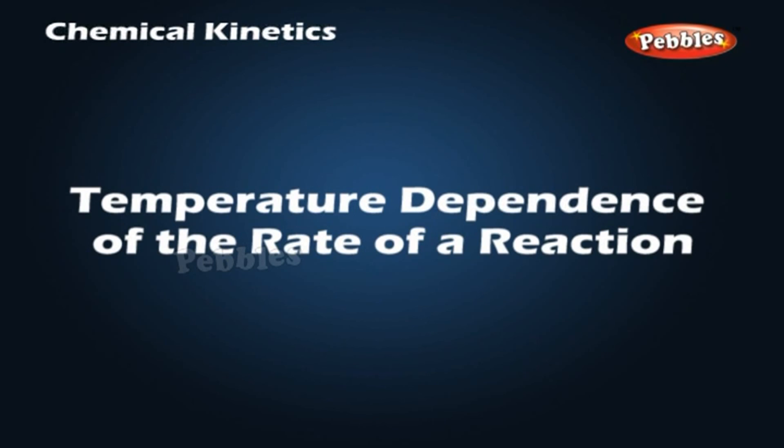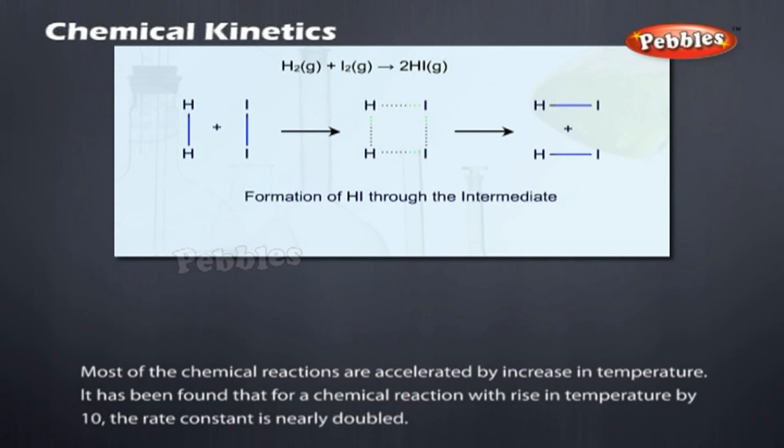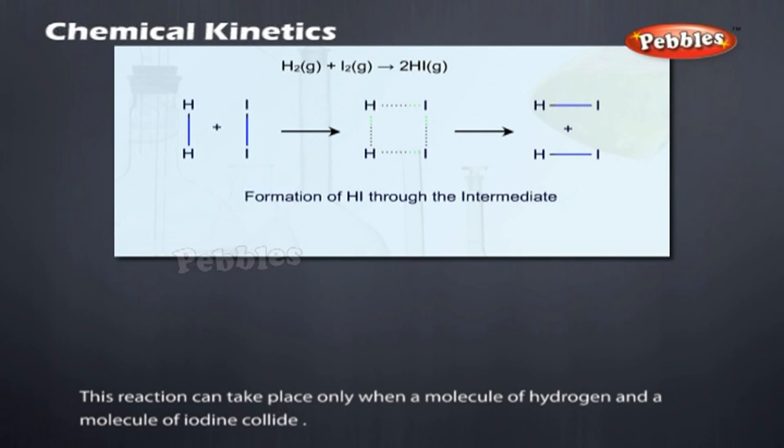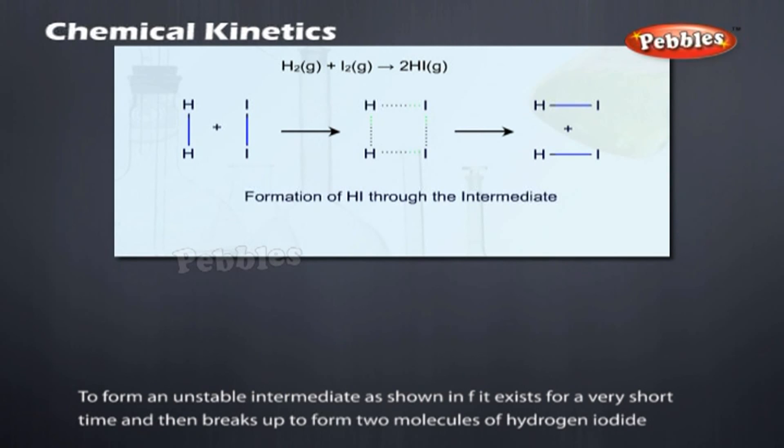Temperature dependence of the rate of a reaction. Most of the chemical reactions are accelerated by increase in temperature. It has been found that for a chemical reaction with rise in temperature by 10 degrees, the rate constant is nearly doubled. The temperature dependence of the rate of a chemical reaction can be accurately explained by Arrhenius equation.